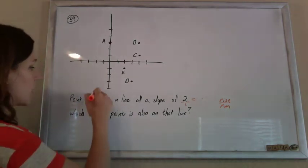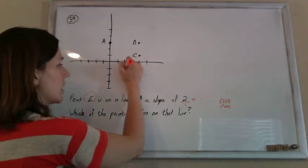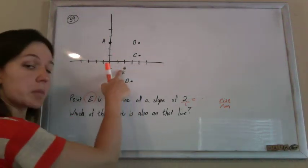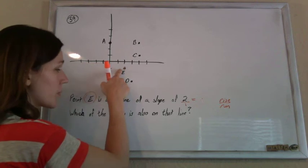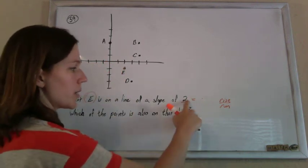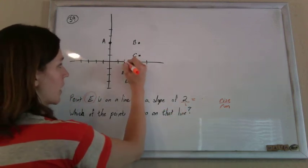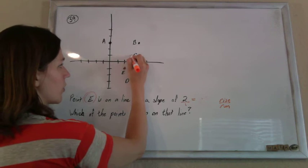And then they tell me that E is on my line. So if E is on my line, I'm going to start there. And from that point, to get to any other point on my line, I'm going to rise up 2 and run over 1. So from E, I'm going to rise up 2 and run over 1.